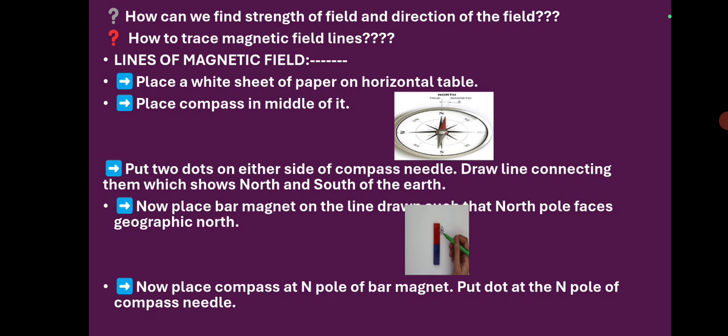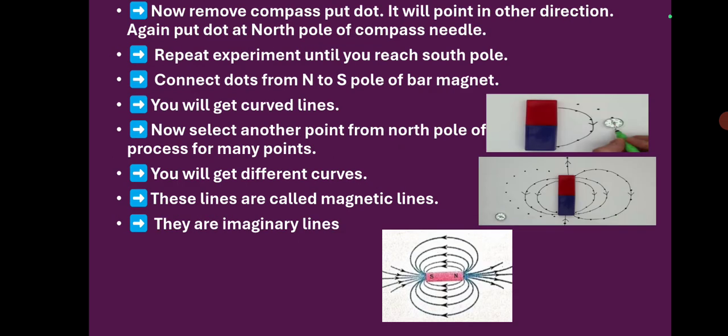Now you have the north and south directions. On that line, as shown in diagram 2, place the bar magnet in such a way that north pole faces geographical north. Now place the compass at the north pole of the bar magnet as shown in the second figure. Put a dot at the north pole of the compass needle. In such a way, again move the compass and keep the dot. Continue until you reach the south pole.